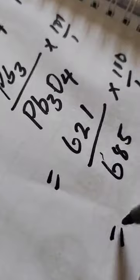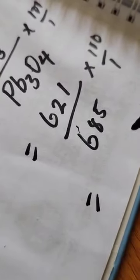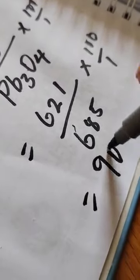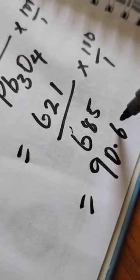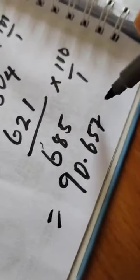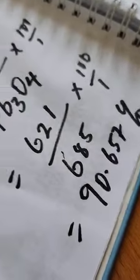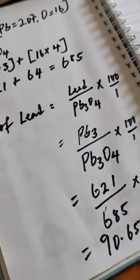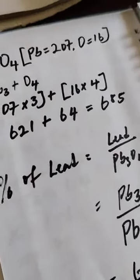So if we cross-multiply, the percentage composition is simply 90.657 percent. This is how we calculate the percentage composition regarding a compound.